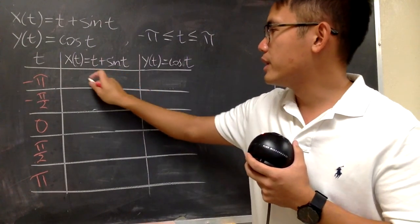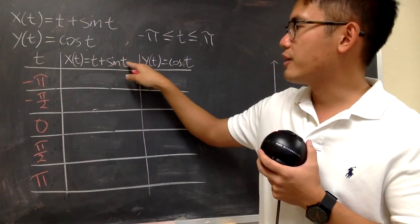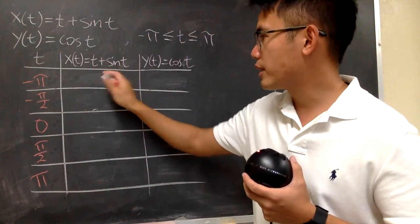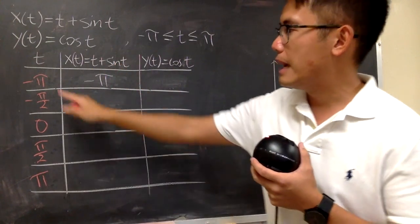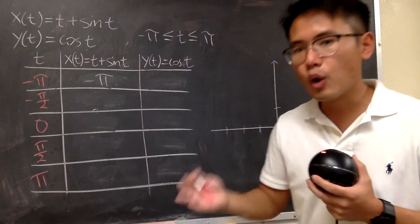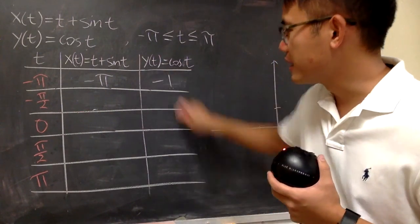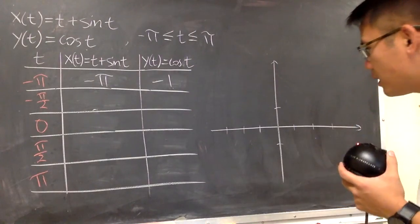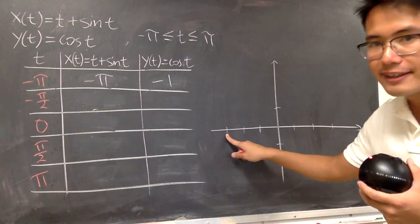Plug in negative pi into here, we get negative pi, and sine of negative pi is 0, so this right here is just negative pi, and plug in negative pi into here, cosine of negative pi is negative 1, so this is negative 1. So I will come here, well, this is my negative 3.